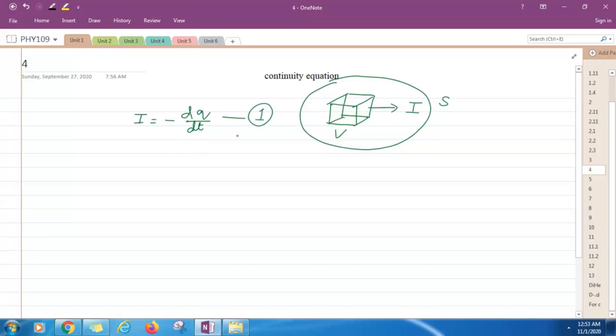Now, what is the definition of current density? Current density J is related with the current by this relation. I is equal to surface integration J dot ds.